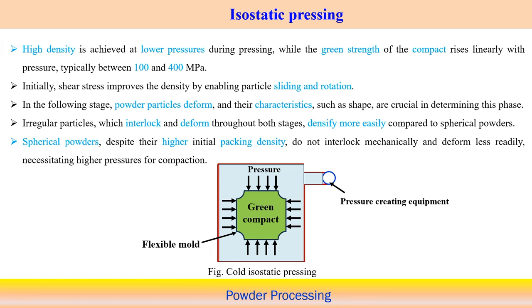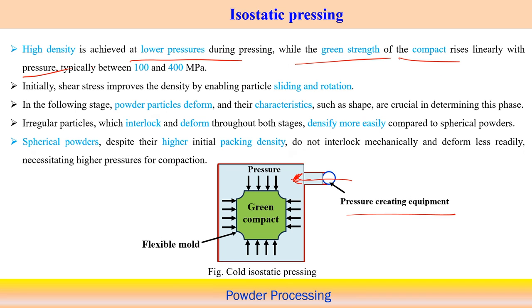High density is achieved at lower pressure during pressing. When pressure is applied, a flexible mold is used through which uniform or hydrostatic pressure is applied on the mold wall, creating the green compact more effectively. Green strength of the compact rises linearly with pressure, typically from 100 to 400 MPa of strength.